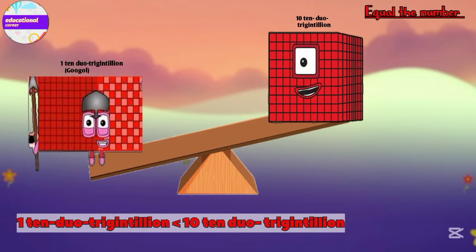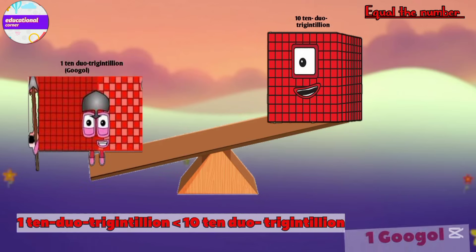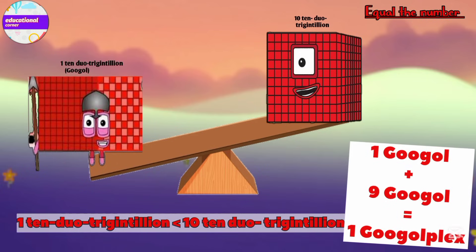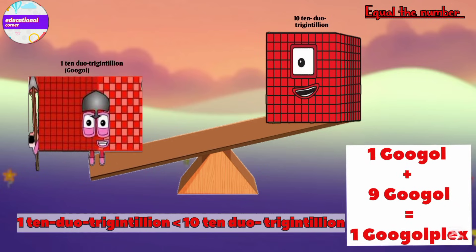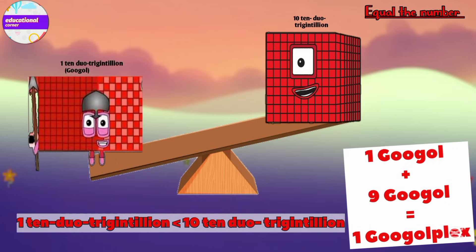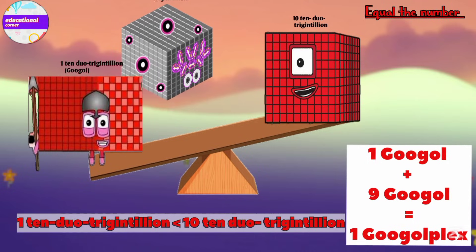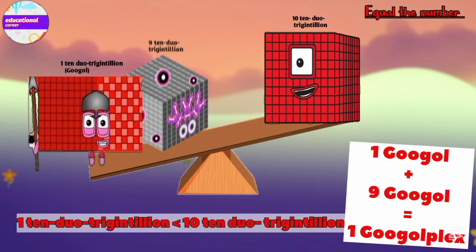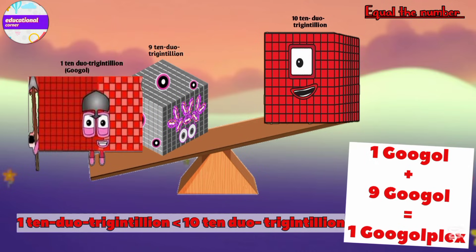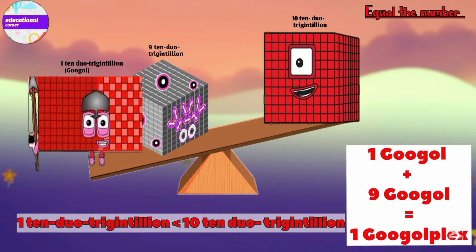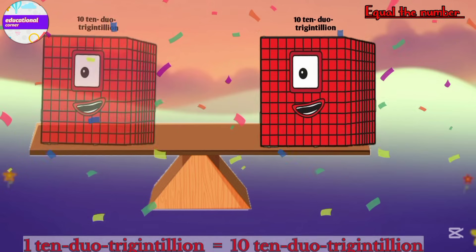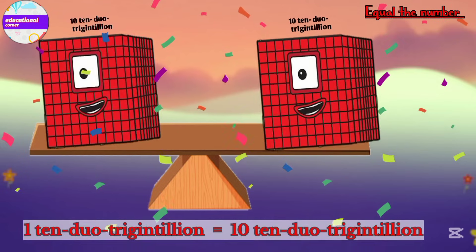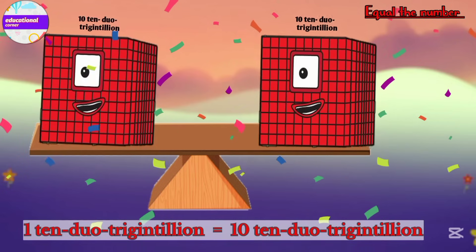1 Google is less than 10 Tandoyot Argentinian. Now equal the numbers by adding 9 Google. 1 Google plus 9 Google equals 1 Googleplex.